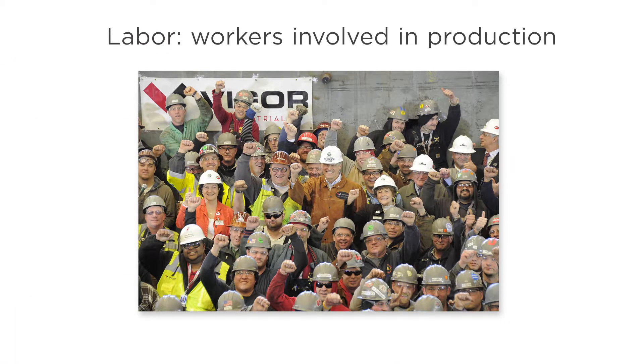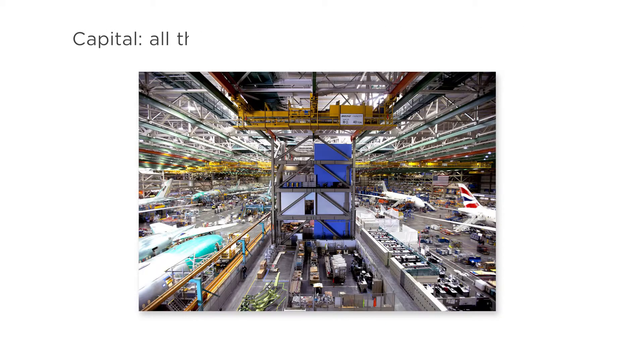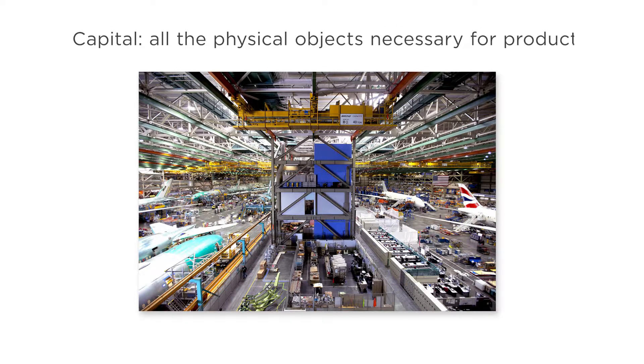Labor captures the number of workers involved in production. Capital captures all the physical objects necessary for production — the machinery and factories and land that might be necessary for the firm to make its product. Just like a utility function described how different mixes of goods could be translated to happiness for the consumer, a production function describes how different mixes of inputs can be translated into outputs for the firm.